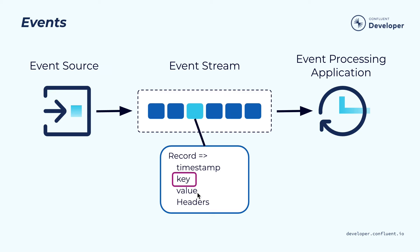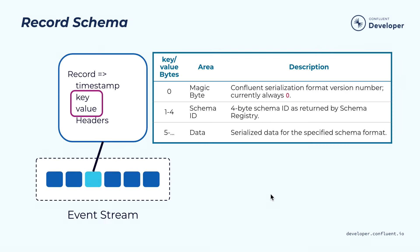Both the key and the value are typically just byte arrays, which gives people the flexibility to encode data in whatever way they want using their favorite serializer. For example, if you've integrated Kafka with Confluent Schema Registry using the Avro serializer, the key and value will start with a magic byte followed by a four-byte schema ID, followed by the rest of the serialized data using Avro encoding.